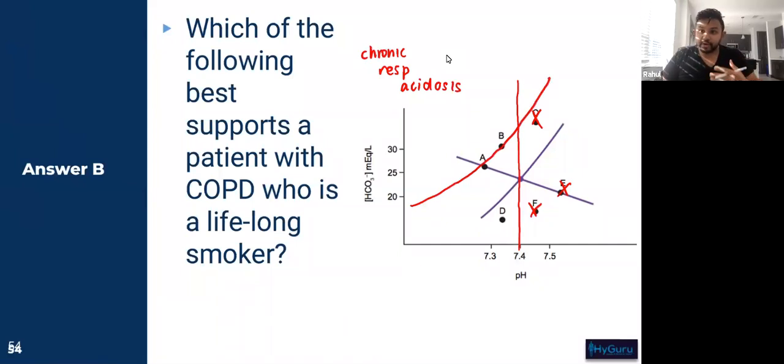Like I said, when you are going to have some element of compensation, you are going to come off of this purple isobar, which is going to be related to your acute respiratory acidosis.